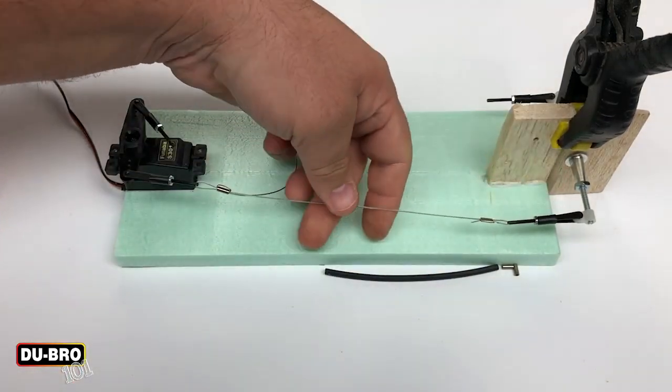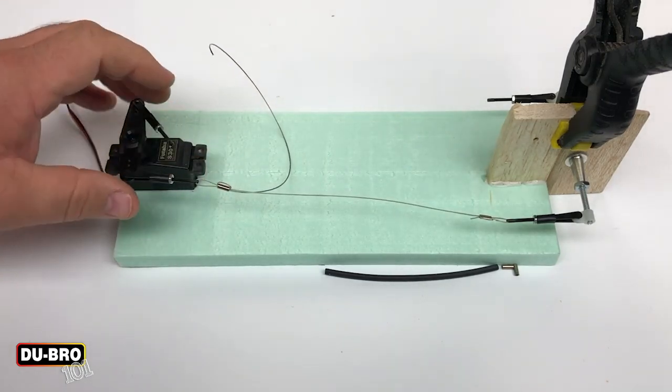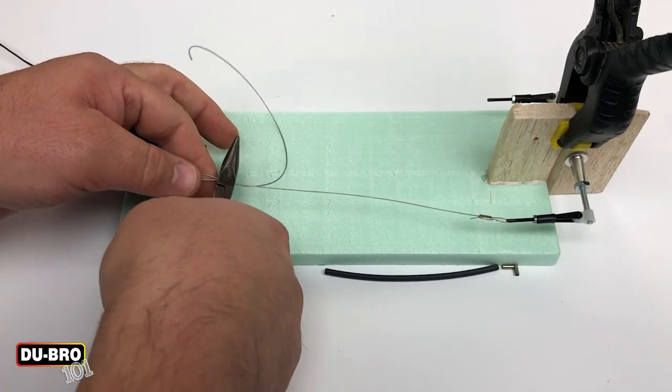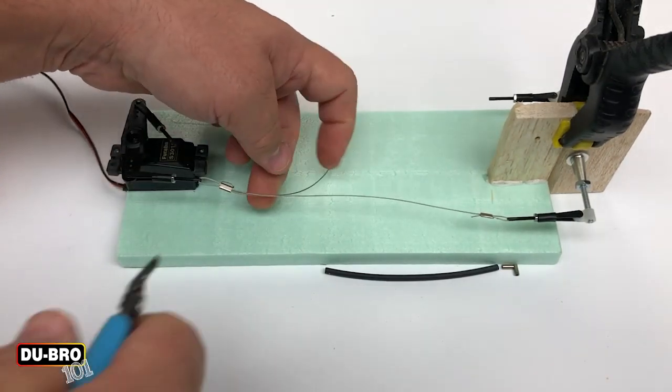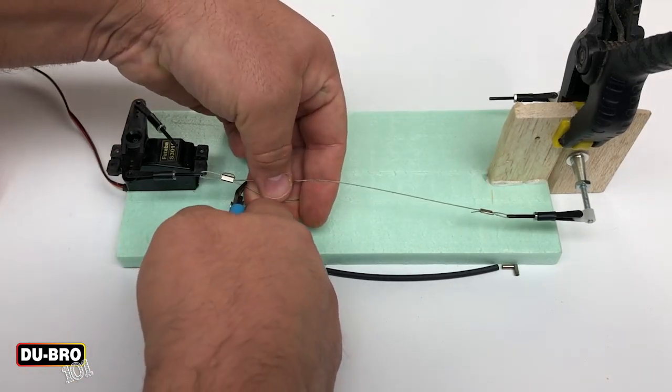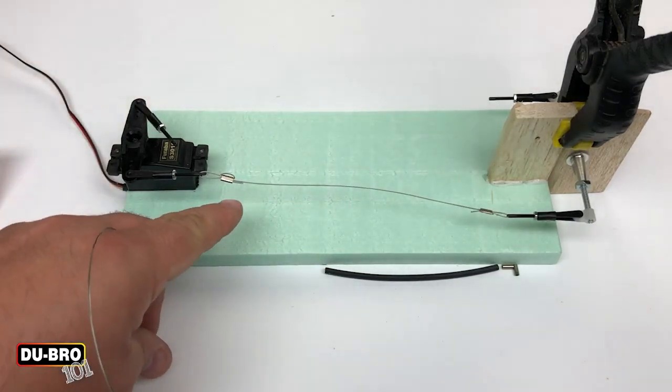So now you have a fairly loose but mostly straight cable. Then it's a simple matter of doing your crimp and cutting the excess. I usually leave about half a centimeter of length on the end.